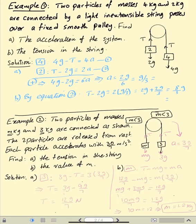Example 1: two particles of 4 and 2 kilograms connected by a light inextensible string. Remember, it's light because we ignore the mass of the string, and inextensible means the tension is equal throughout the motion. The string passes over a fixed smooth pulley. Find the acceleration of the system — remember it's one string so we say system. Since 4 is heavier, 4G is the main force. Equation 1: 4G minus T equals 4A.